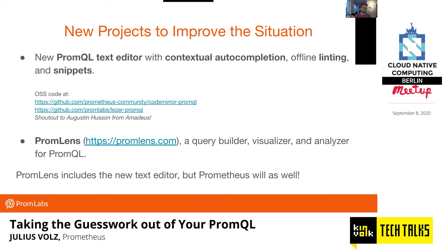Today I want to talk about two new projects to improve this situation. The first is a PromQL text editor with contextual autocompletion, linting, and snippets. This part is actually open source — it's a collaboration by me, Promlabs, and Augustin from Amadeus. You can look at the source code in the two linked repos and contributions are very welcome. Then Promlens is a commercial product by Promlabs — a query builder, visualizer, and analyzer tool for PromQL that gives you really deep insight into the actual structure of your query. Since Promlens includes this new text editor, we'll only be looking at Promlens today, but Prometheus will also include this cool new text editor soon.